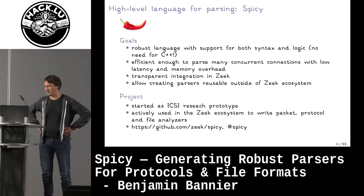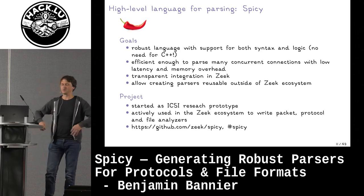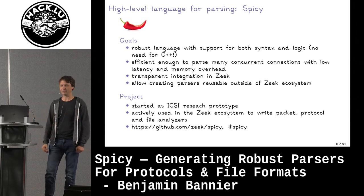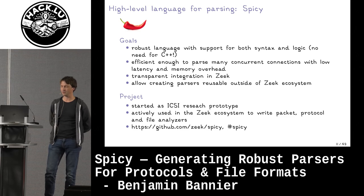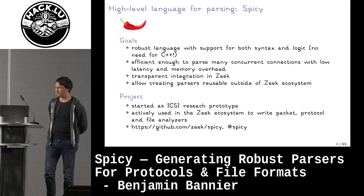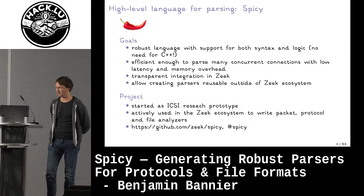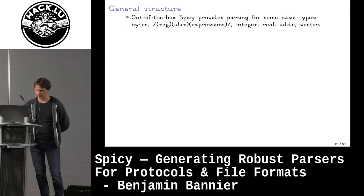SPICY is the Zeek project's answer to that problem. SPICY is basically a robust domain-specific language powerful enough to parse all kinds of network traffic, and efficient enough to parse many concurrent connections — sensors might see 10,000 concurrent connections all waiting for data incrementally. We designed it to be easy to integrate into Zeek, and also set out from the beginning so these descriptive parsers can be used outside the Zeek ecosystem. SPICY started as a research prototype but we've evolved from that and are actively using it inside Zeek itself and in the broader Zeek ecosystem.